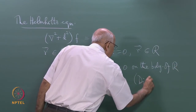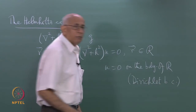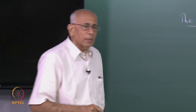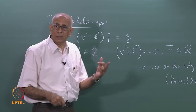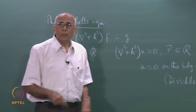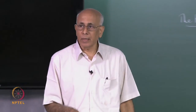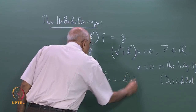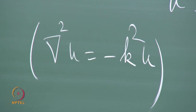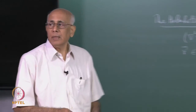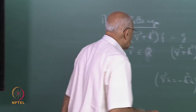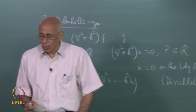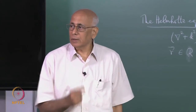The most common boundary condition is u equal to 0 on the boundary of R — these are called Dirichlet boundary conditions. For instance, if you have a two-dimensional membrane like a drum head clamped at the edges, the displacement u is 0 at the boundary. You ask what are the normal modes of vibration, namely the possible values of k squared. It is an eigenvalue equation: del squared u equals minus k squared u, and the allowed values of k squared correspond to the normal modes of the region.